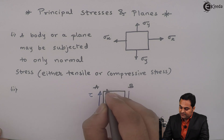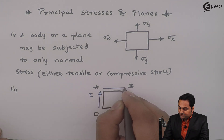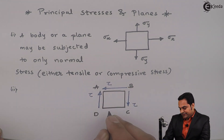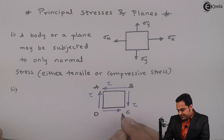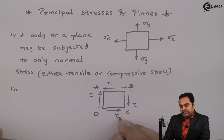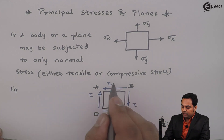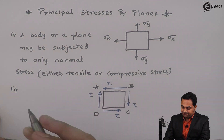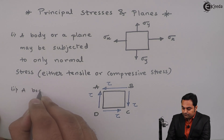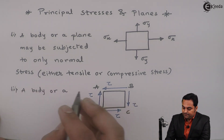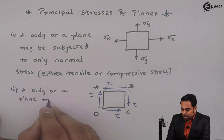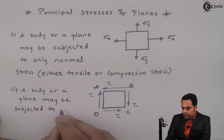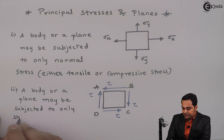Similarly, on face AB there can be shear stress Tau acting towards the left, and on face DC there can be shear stress acting towards the right. Because of that this is called anti-clockwise shear. So again there is shearing action, and I can say that a body or a plane may be subjected to only shear stress.